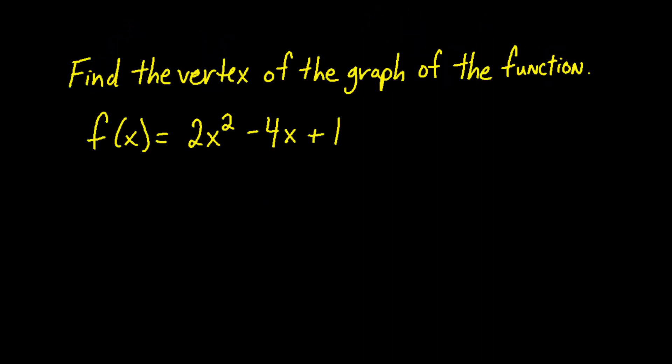This question wants us to find the vertex of the graph of the function f(x) equals 2x squared minus 4x plus 1. To do this, we will want to know the vertex formula.